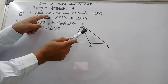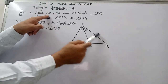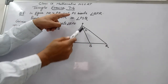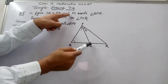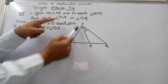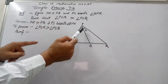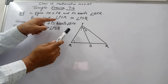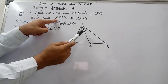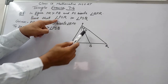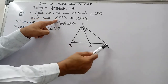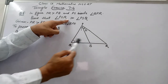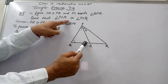As you can see in the figure, side PR is greater than side PQ, and PS is bisecting angle QPR, which means angle 1 is equal to angle 2. We have to prove that angle PSR is greater than angle PSQ.